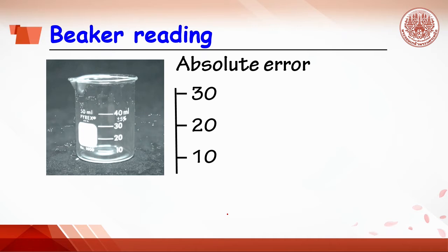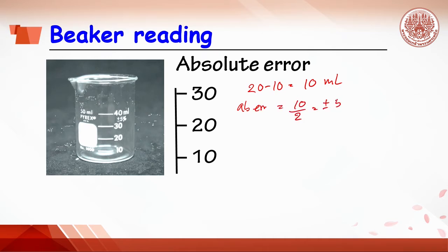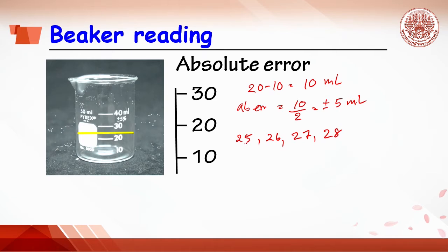In the case of a beaker, say a 50 mL beaker, the smallest scale is 20 minus 10, which equals 10 mL. The absolute error will be 10 divided by 2, which is plus or minus 5 mL. For example, if the water level is at the yellow line, the volume may be reported as 25, 26, 27, or even 28 — they are all correct since the last digits are uncertain numbers.